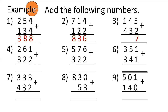5 plus 2 is 7, 4 plus 3 is equal to 7, and 1 plus 4 is equal to 5. So 145 plus 432 is equal to 577. Number 4: 261 plus 322.